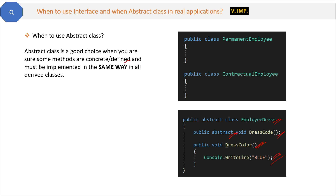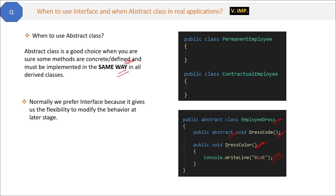An abstract class is a good choice when you are sure some methods are concrete and must be implemented in the same way across all derived classes. Normally we prefer interfaces because they give us the flexibility to modify the behavior of methods at a later stage. That's why we prefer interfaces.